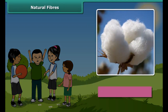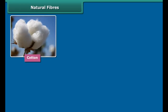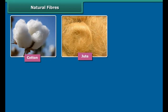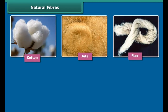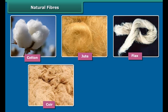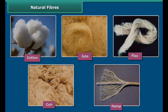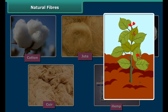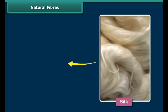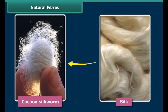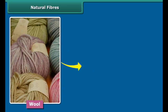Fibers can be both natural or artificial. You feel so comfortable when you wear cotton clothes in summer. Cotton is a natural fiber. Natural fibers like cotton, jute, flax, coir, hemp, etc. are obtained from plants.